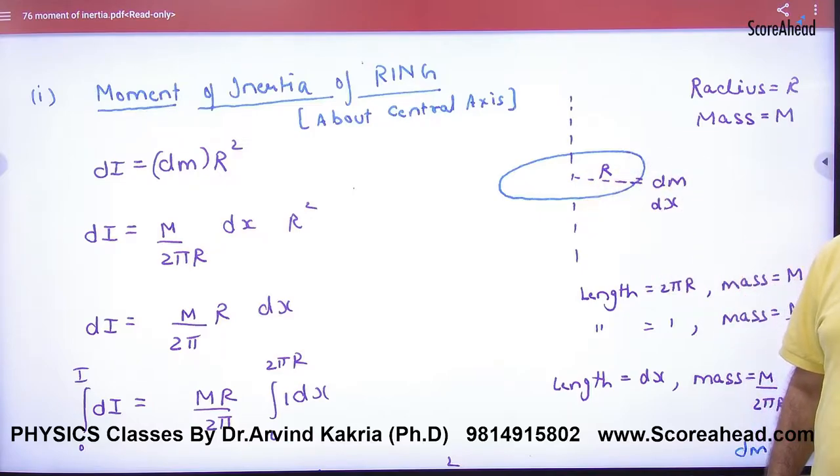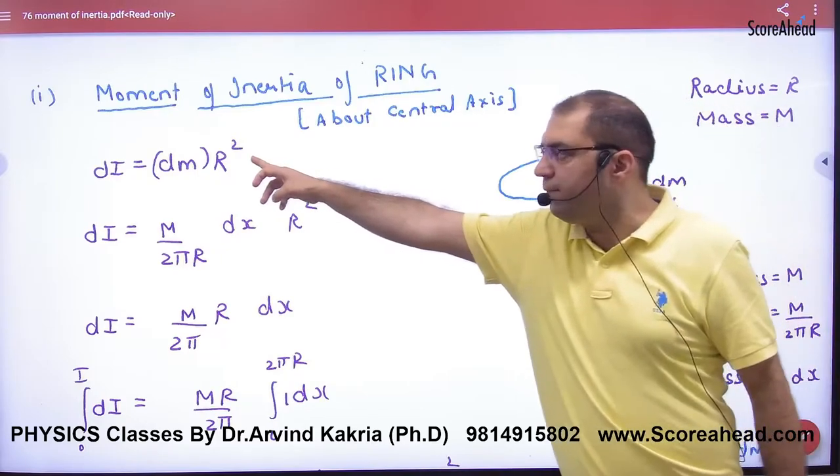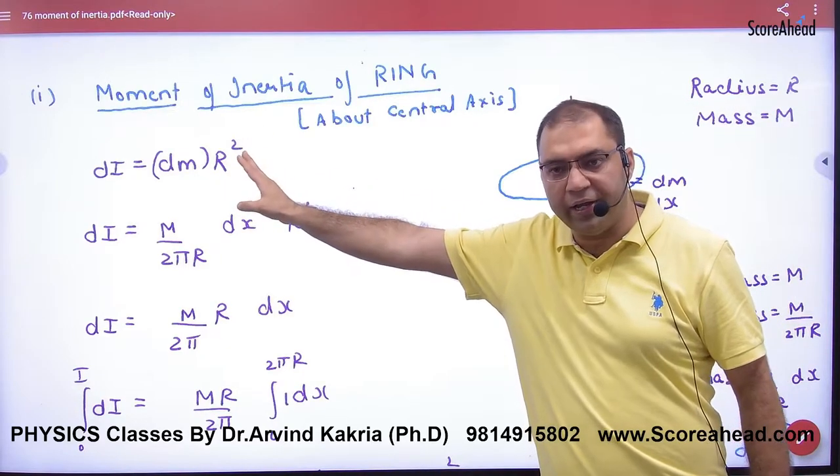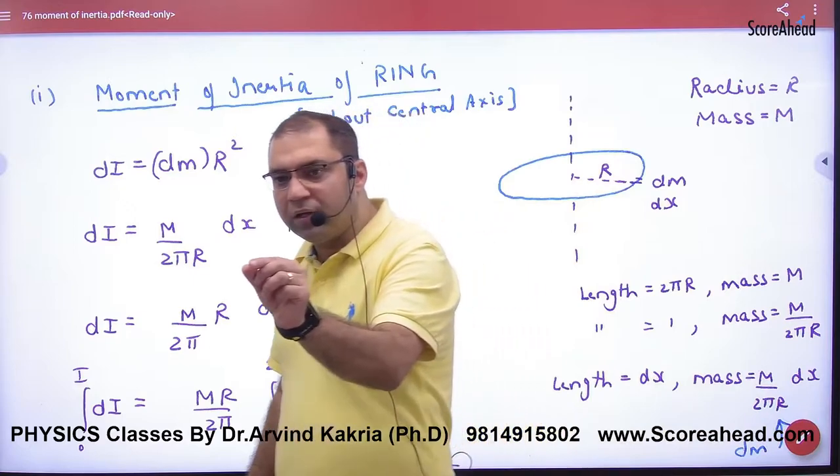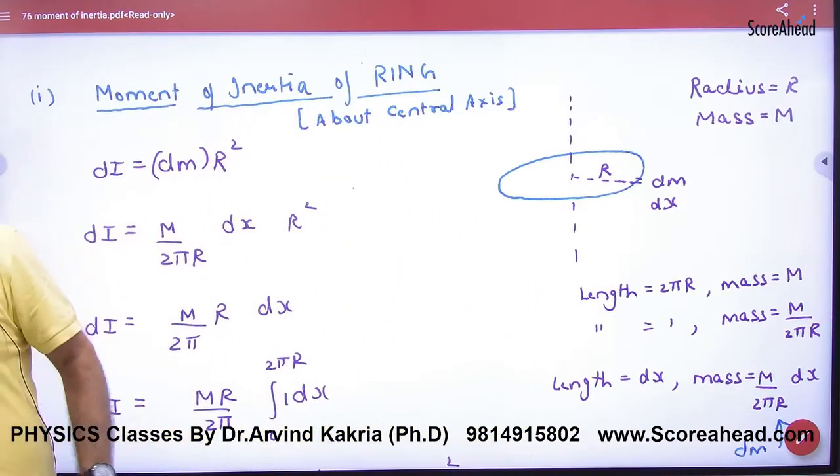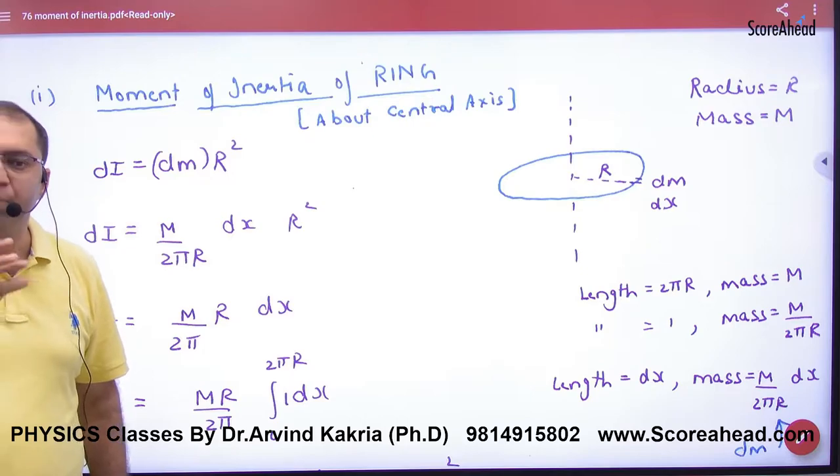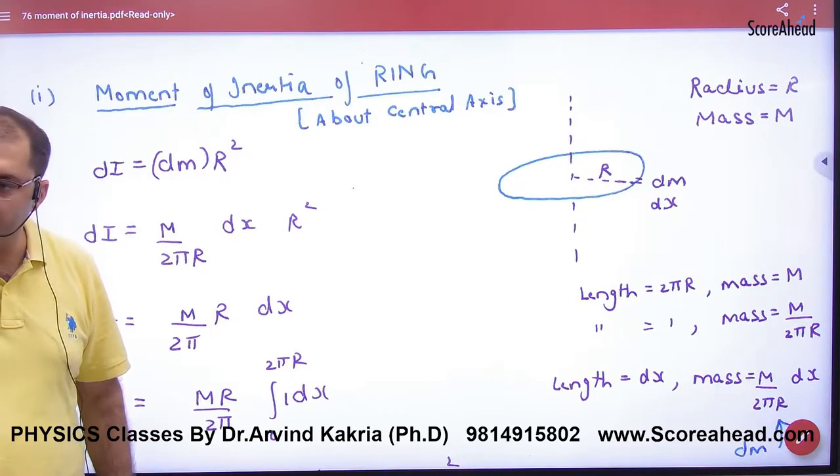The point mass moment of inertia is mass times distance squared. For this point mass dm, the moment of inertia dm into r, but this point mass moment of inertia is di (small). So what will we do?